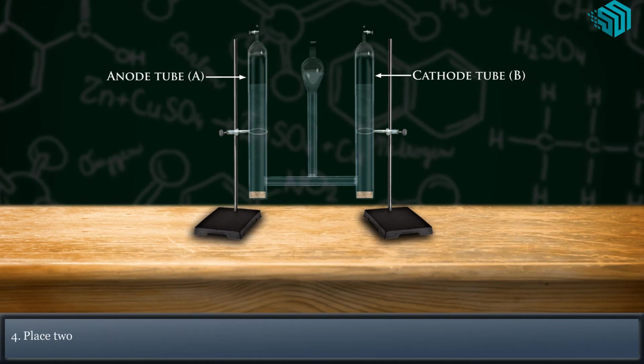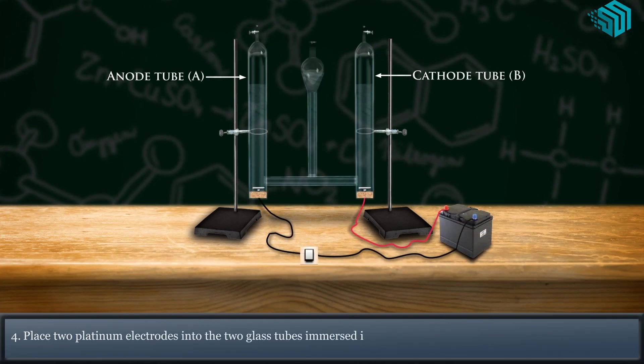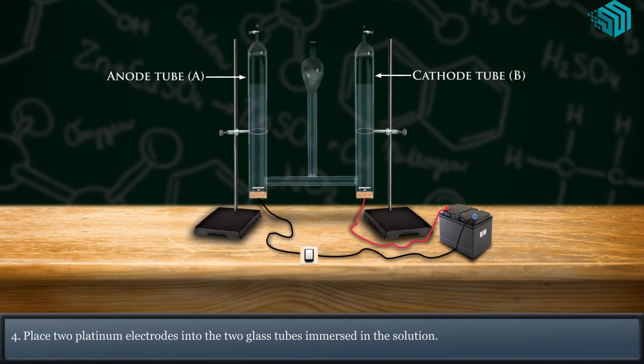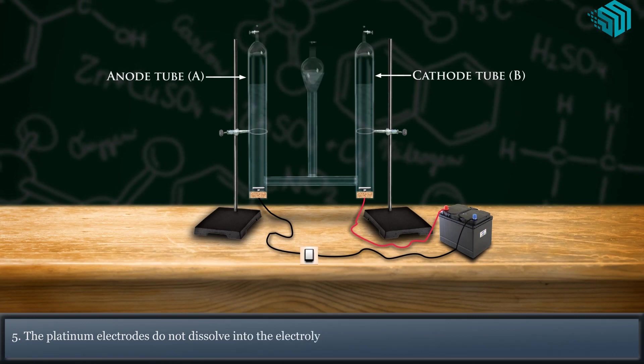Place two platinum electrodes into the two glass tubes immersed in the solution. The platinum electrodes do not dissolve into the electrolyte.